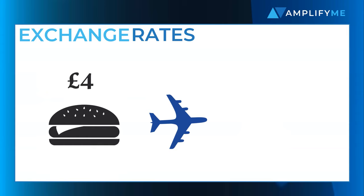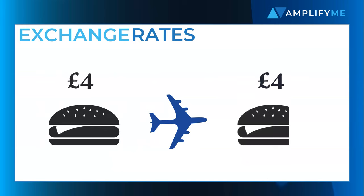However, when you get to the front of the queue and try to buy a Big Mac with your £4 worth of dollars, you find that you can only buy three quarters of the Big Mac. In this example, it's very likely that the pound is undervalued relative to the dollar.